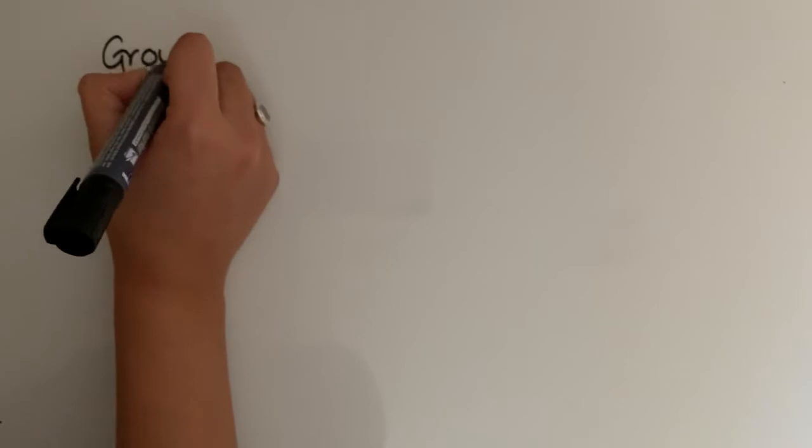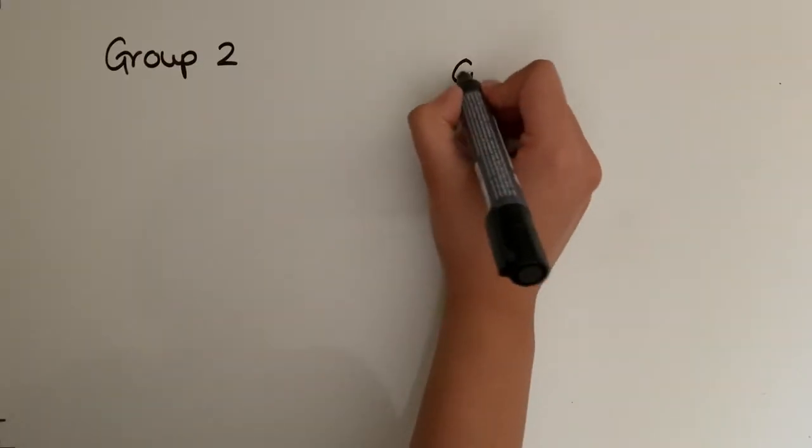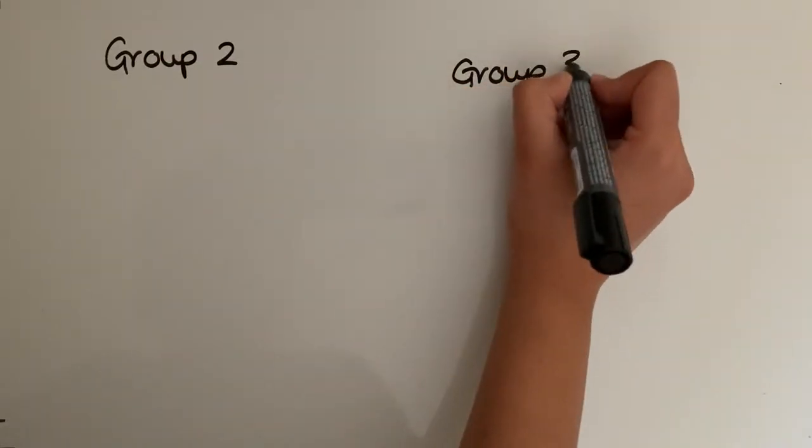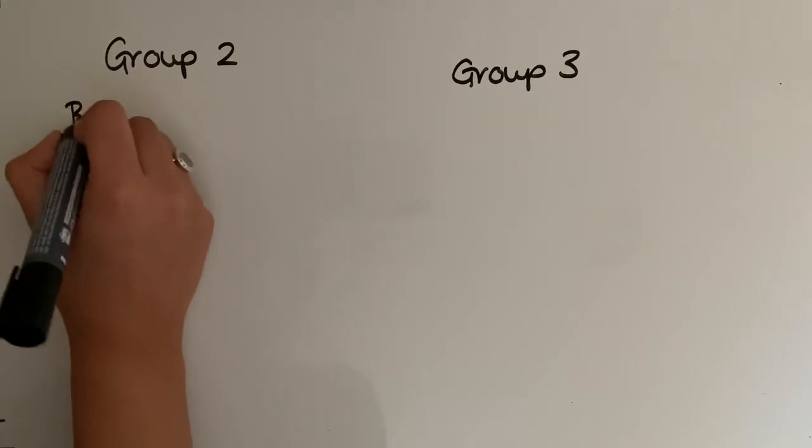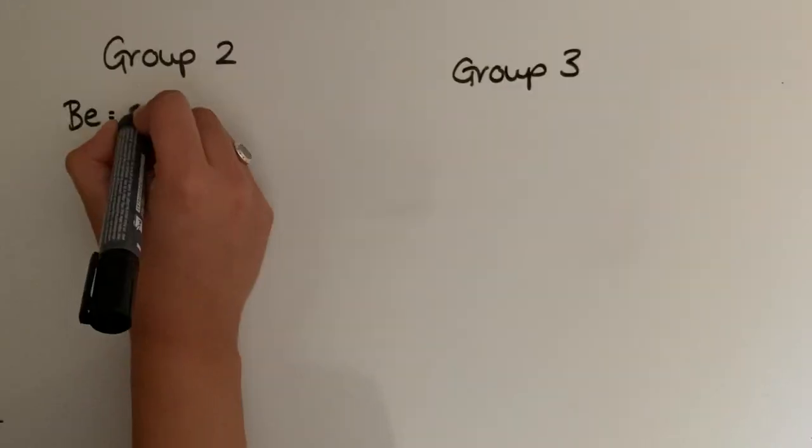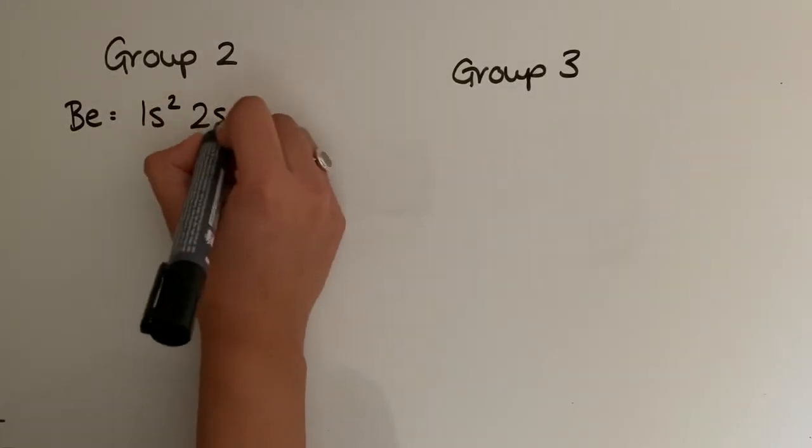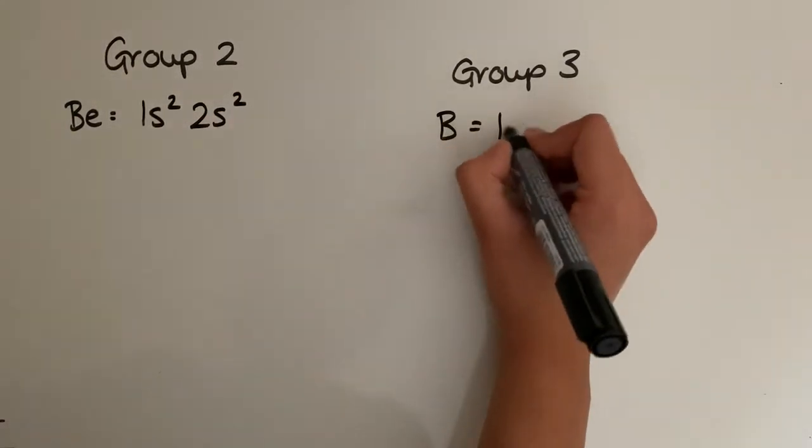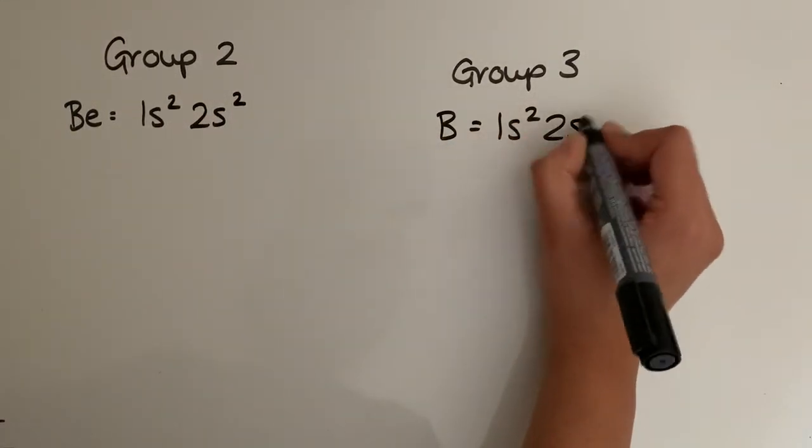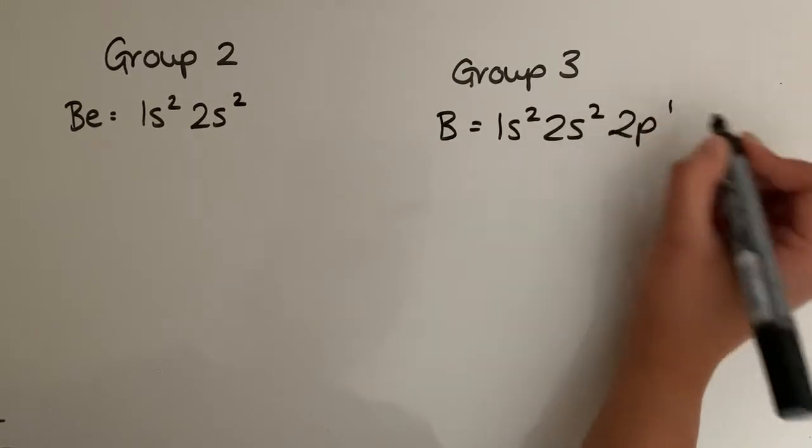You'll always have a dip between group two and group three. I'm just going to go for beryllium and boron for this. Beryllium has four electrons, so it's 1s² 2s². Boron has five electrons, so it's 1s² 2s² 2p¹.